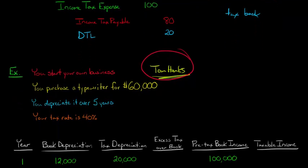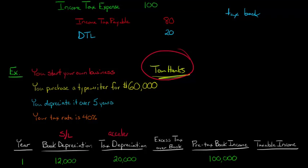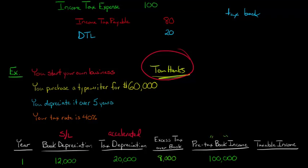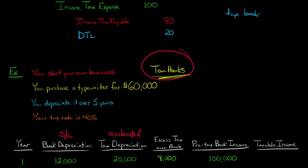Let me show you how this results in a deferred tax liability and what the journal entries would be. For year one, book depreciation is straight-line — $12,000 — and tax depreciation is on an accelerated basis, so you're taking $20,000 in year one. The excess tax depreciation over book depreciation is $8,000. With pre-tax book income of $100,000, taxable income is lower at $92,000, because we took that extra $8,000 in depreciation expense.